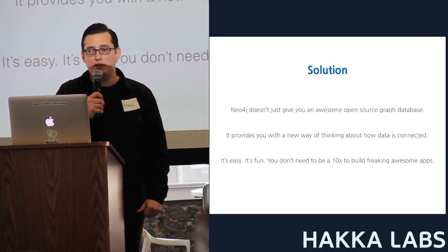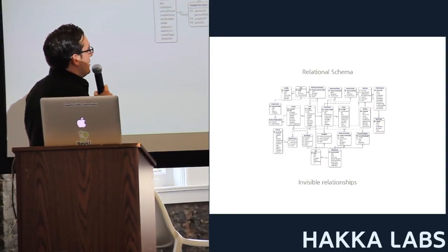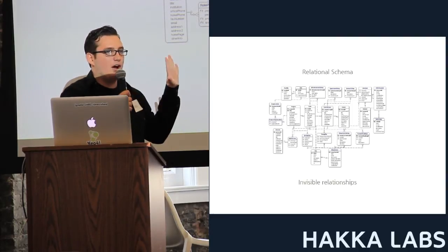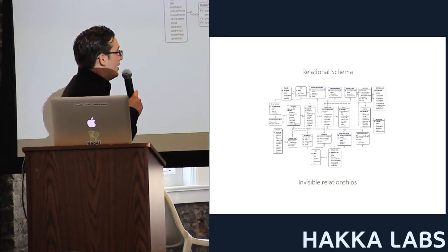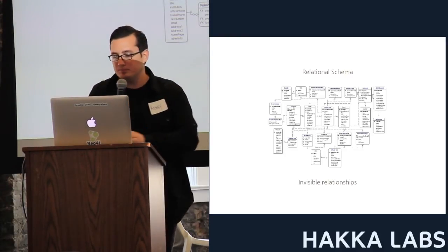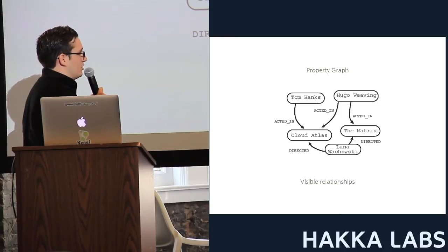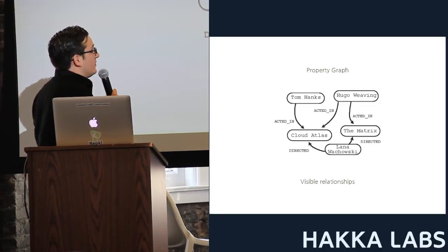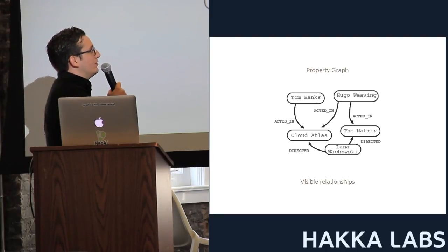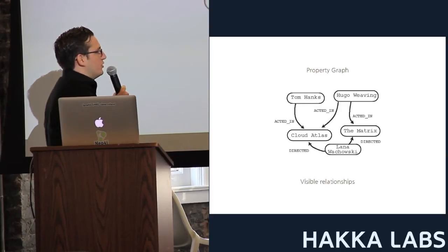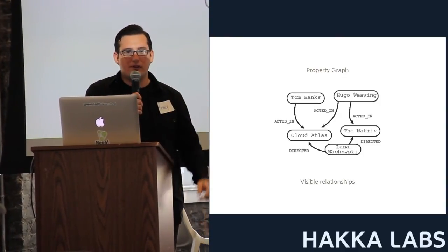It's easy, it's fun, and you don't need to be a 10x developer to build awesome apps. Here's an example of a relational schema — it's pretty ugly. You can't really look at it and understand the relationships between tables. You have foreign key relationships and primary keys, but it's tough to see exactly what is related to what. We use a property graph data model, which lets you explicitly set relationships in a way that's really easy to understand. For example, in a movie domain: Tom Hanks acted in Cloud Atlas with Hugo Weaving, and Hugo Weaving acted in The Matrix, directed by Lana Wachowski. Very natural and easy to articulate.